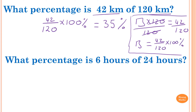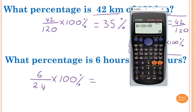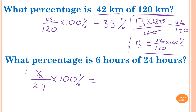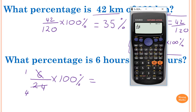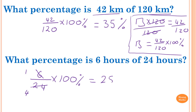Question two: what percentage is 6 hours of 24 hours? All you need to do is 6 hours over 24 hours — that's a fraction, but we want percentage, so we times by 100. If you notice, you can divide by 6 to get one quarter. A quarter is 25 percent. Otherwise just put 6 over 24 times 100 into a calculator — which gives 25 percent.